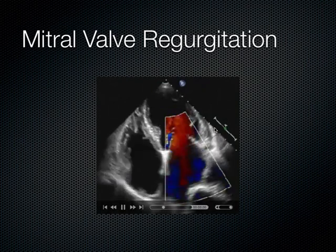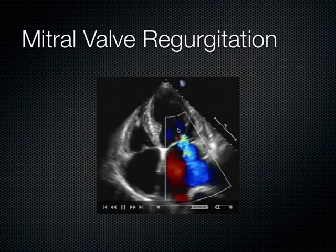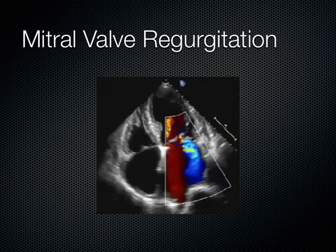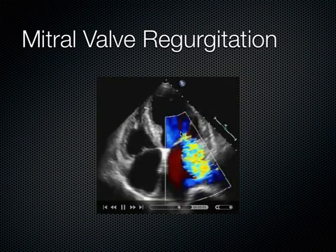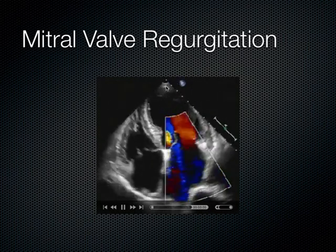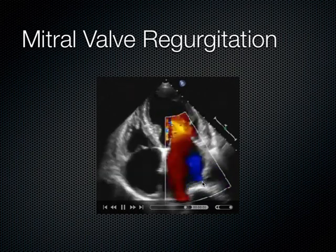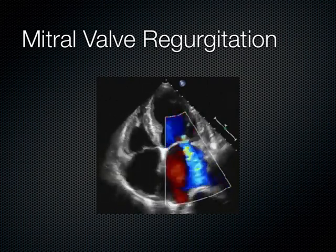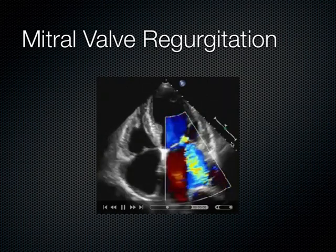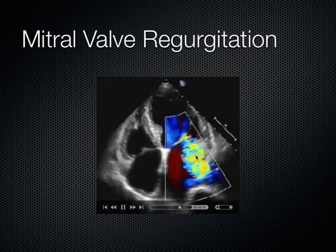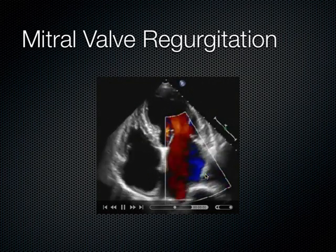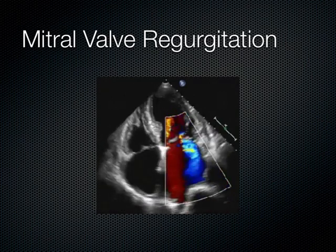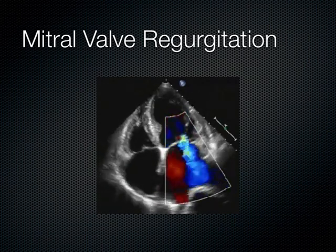To look at the mitral valve, the apical 4 chamber view is best, where we can see BART — B-A-R-T — blue away, red towards. During systole, there is a blue jet that moves away from the probe's footprint and into the left atrium. Each time the left ventricle squeezes, as we put color flow Doppler over the mitral valve, we can see a blue jet squirting back into the left atrium. This blue jet hitting the back wall of the left atrium means the patient has mitral valve regurgitation.